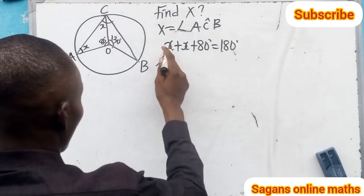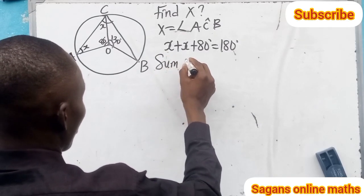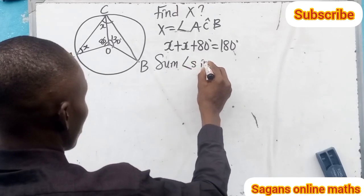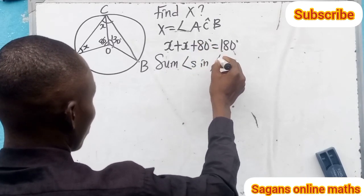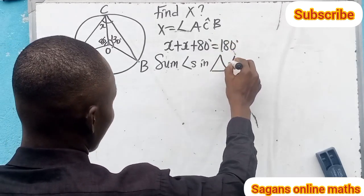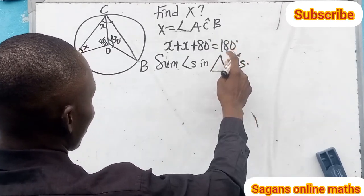Using the sum of angles in a triangle, that's the sum of angles in triangles, because it's toward 180.